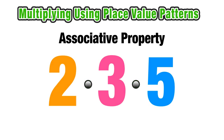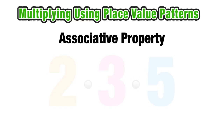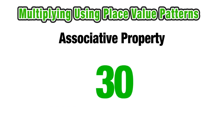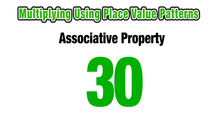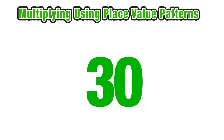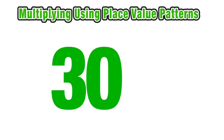So the associative property states that the order of the terms does not matter when you're multiplying real numbers, which we can see in this example where the order of the terms did not matter since the product always resulted in 30.